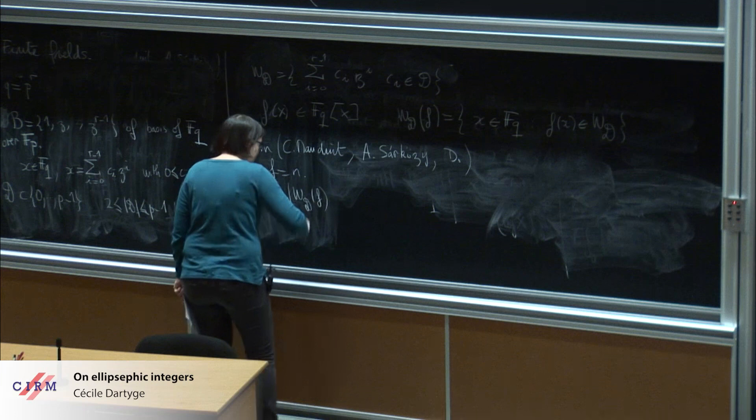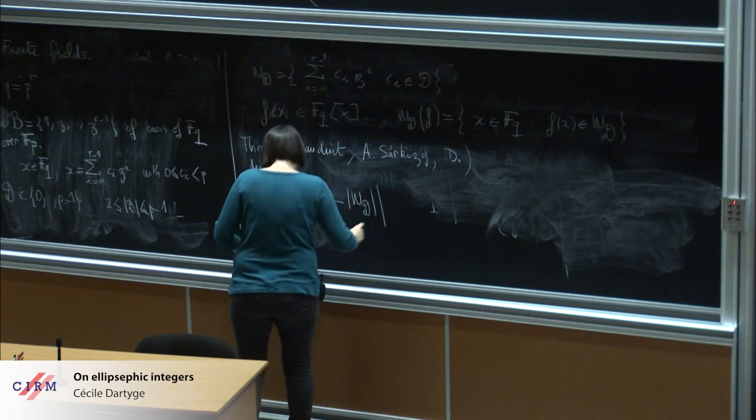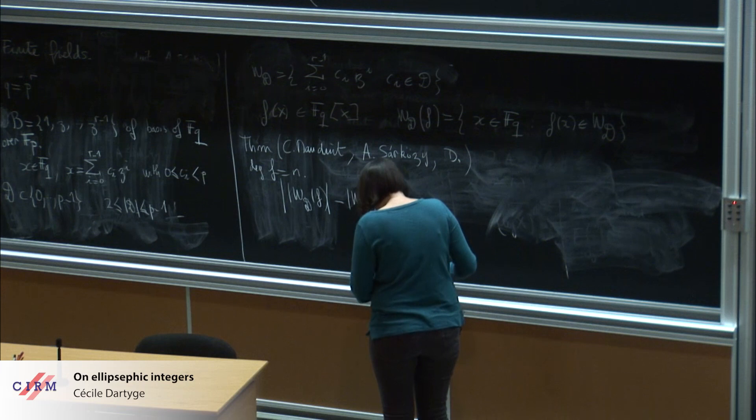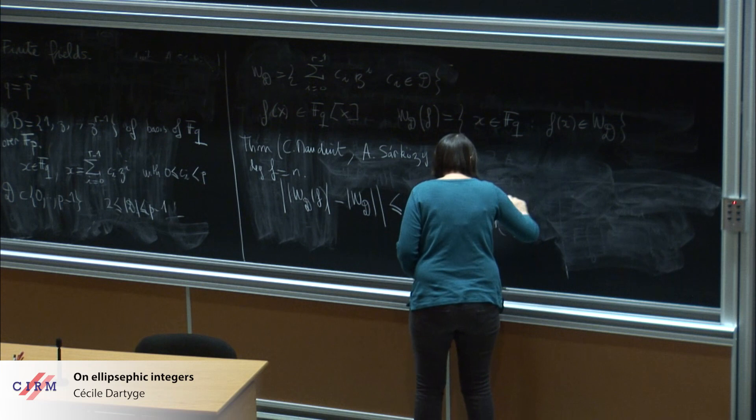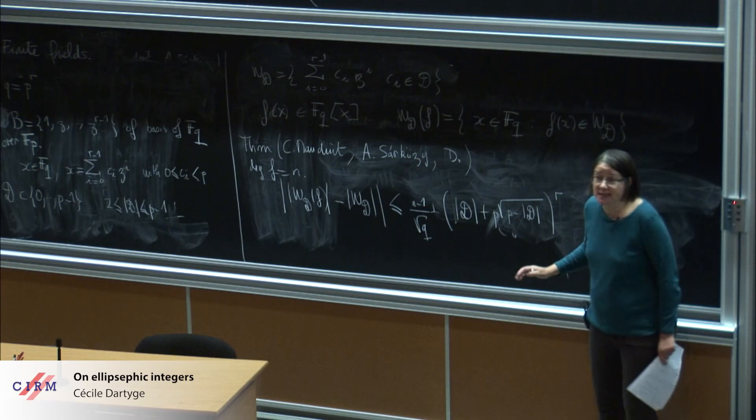We want to approximate W_d of f with the cardinality of W. What we prove - we have the square root of q. In fact when d is small this result is not really interesting. This result is interesting when the proportion of digits of d is strictly positive and in fact large enough.